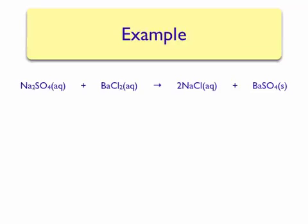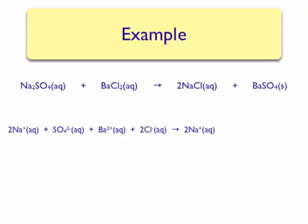To write complete and net ionic equations, we need to split all strong electrolytes into their constituent ions. Sodium sulfate can be split into two sodium ions and one sulfate ion for every formula unit. Barium chloride can be split into a barium 2+ ion and two chloride ions. On the product side, two formula units of sodium chloride will produce two sodium ions and two chloride ions. Since barium sulfate is the solid, we do not split it into ions — it carries over from the molecular equation to the complete ionic equation.